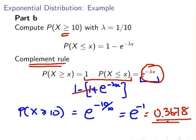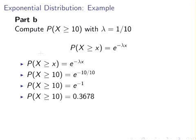Working that out on a calculator gives 0.3678. So the probability of X greater than or equal to 10 is 0.3678. That is: 10 multiplied by one tenth equals 1, giving e to the minus 1, with the answer being 0.3678.